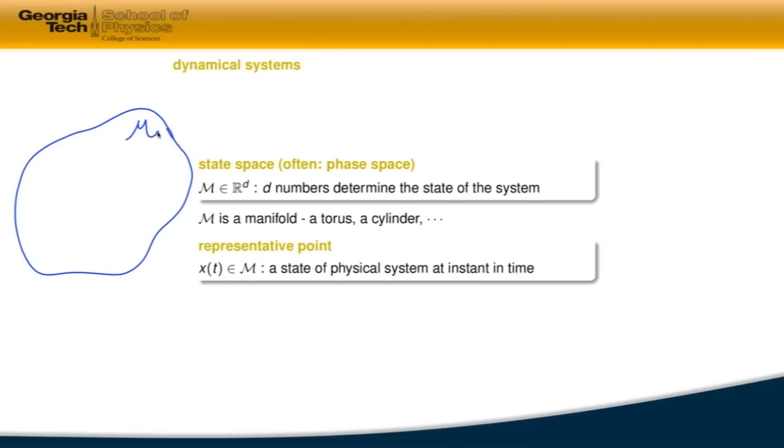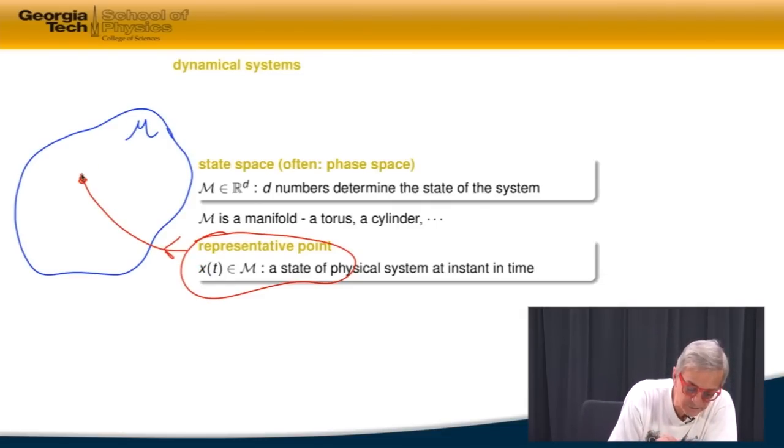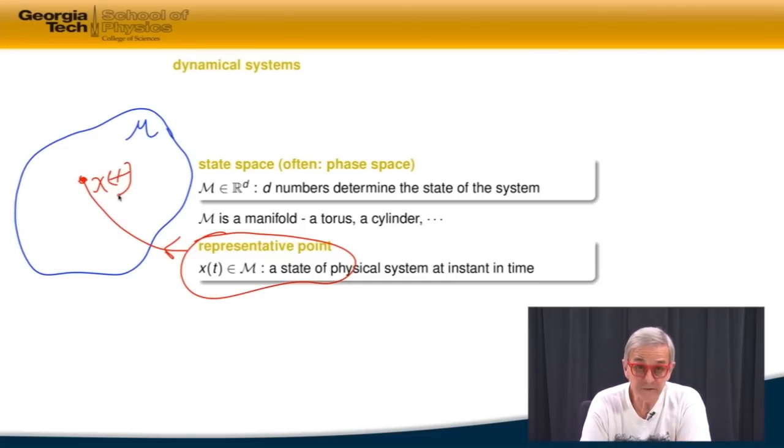We'll use a little script M to do this. And in it, there is a point, a representative point, x. And the idea of state space is that if there is d numbers, d could be 1, 2, or 100,000 or a million. But that's what we call a dimension of the state space. If d numbers uniquely define the state of your system, we'll denote it by little x at time t. That is a dynamical system's state space.